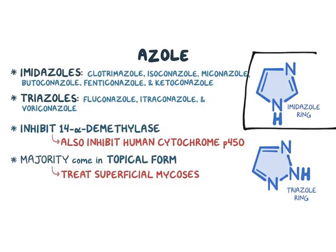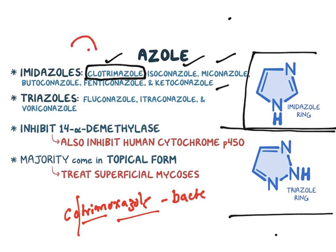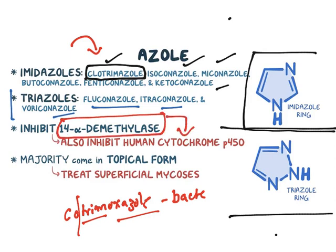Azoles are an important class with two subgroups: drugs containing an imidazole ring — clotrimazole, isoconazole, miconazole, ketoconazole — and drugs containing a triazole ring — fluconazole, itraconazole, voriconazole. Note: do not confuse clotrimazole (an antifungal) with cotrimoxazole, which is a combination of trimethoprim and sulfamethoxazole used to treat bacterial infections. All azoles inhibit 14-alpha-demethylase but also inhibit human cytochrome P450. Most are in topical form since fungal infections are usually restricted to skin.